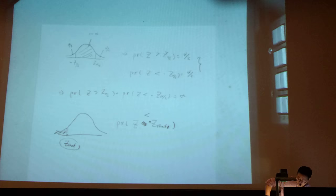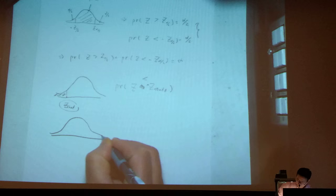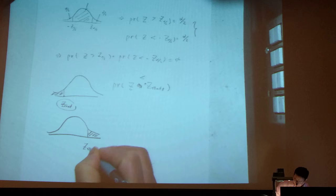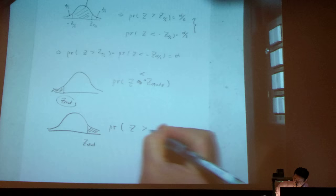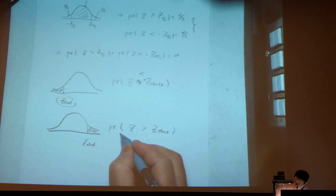Or I can have the second case here. If I know that the z statistic is here, then I ask myself, what is the probability that z is bigger than the z statistic? So this is the question of my interest.